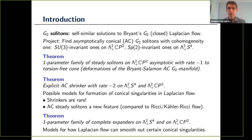If you have a torsion-free G2 structure, then that doesn't move at all under the Laplacian flow — it is in a sense a trivial static solution. But what we want to do is find some non-trivial G2 solitons on some of the same spaces that admit Bryant-Salamon asymptotically conical G2 manifolds, and we look for solitons that also have a large degree of symmetry.